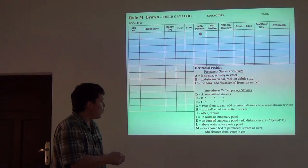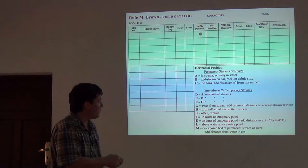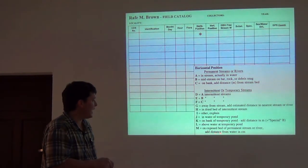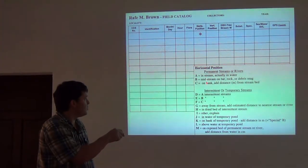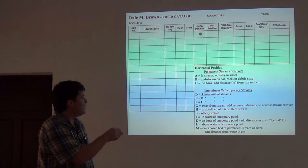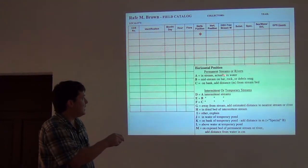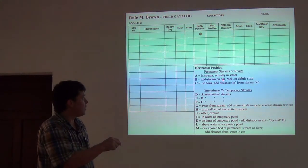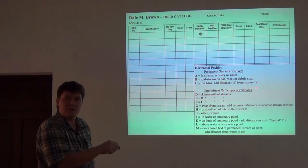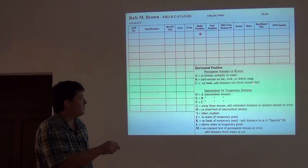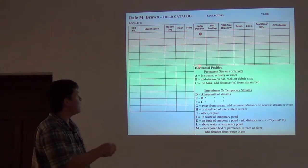Here you can see all the different things: in water of pond, on bank of pond, above water, exposed bed of permanent stream bed, and distance from the water — all these different things you could put in here. We usually end up using the top ones: permanent stream A, B, or C. A being in the stream, actually in the water, versus on the midstream, on a sandbar, rock, or debris snag, or on the bank — and you add distance from the bank every time you record that.